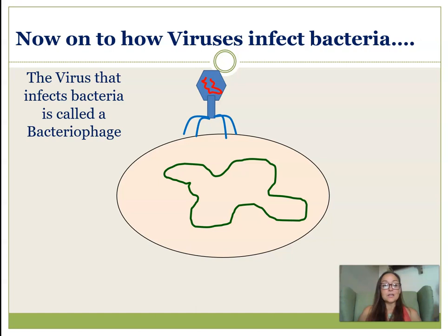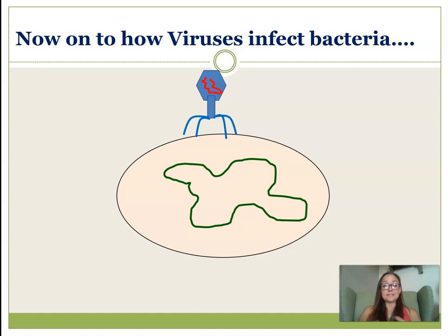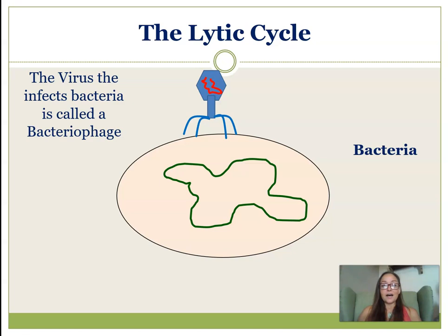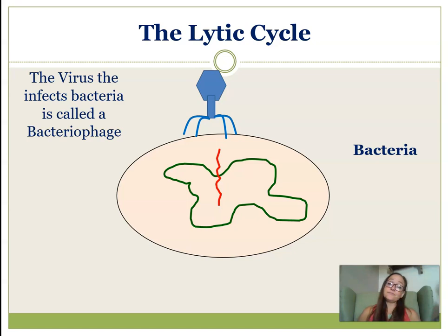When we look at how this bacteriophage infects bacteria, there are actually two life cycles. Our first one is the lytic cycle. In the lytic cycle, the phage will actually insert just its DNA into the host cell — the bacterium. The protein coat itself does not actually enter the cell. There's a famous experiment from the 1950s by Hershey and Chase that confirmed this using radioactive sulfur and radioactive phosphorus.